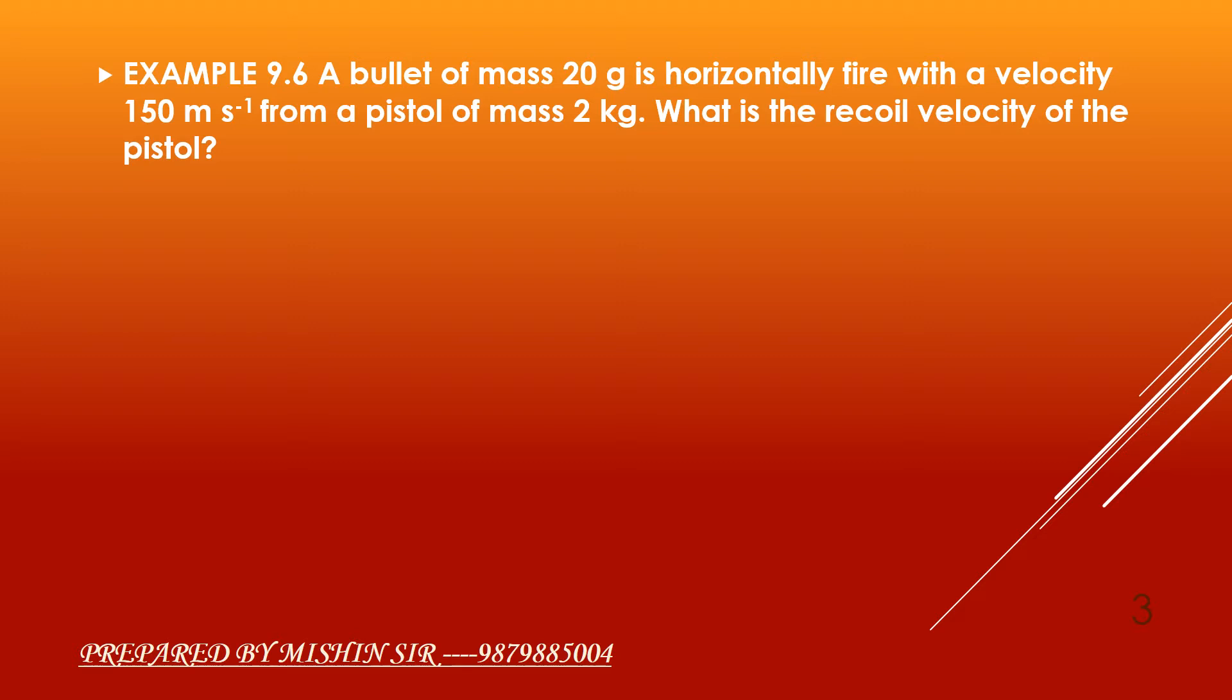We write the data. Mass M1 is mass of the bullet, which is equal to 20 gram. We convert them into kg, that is 0.02 kg. U1, that is the initial velocity of the bullet, as they were in rest, so it will be 0. Mass of the pistol is M2, which is equal to 2 kg.